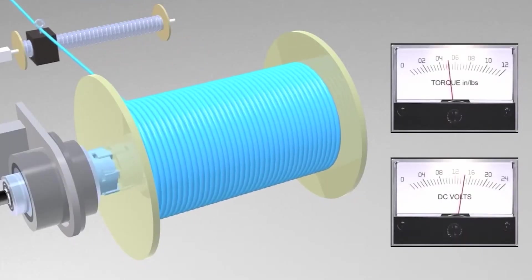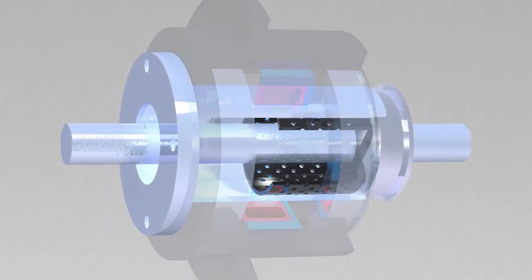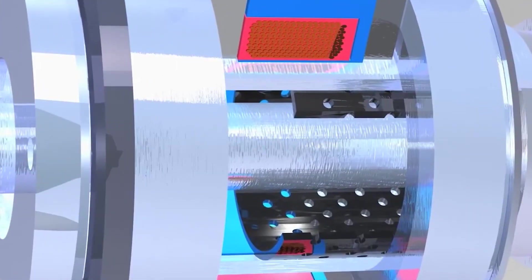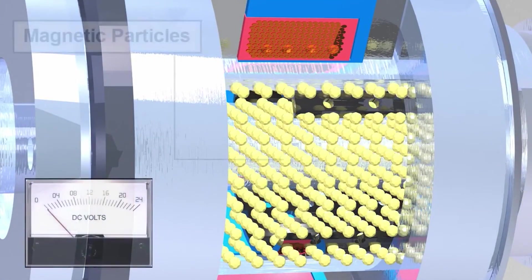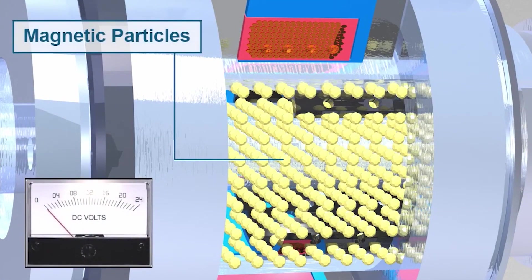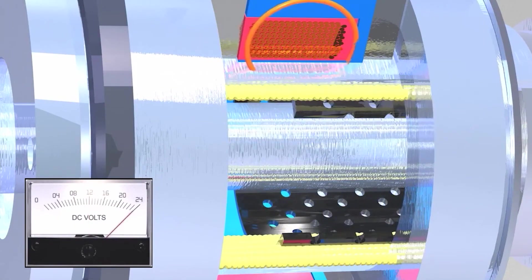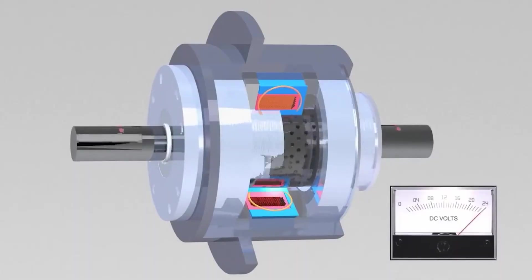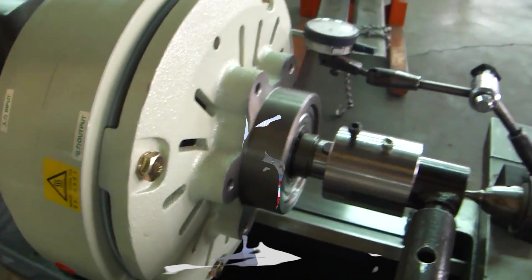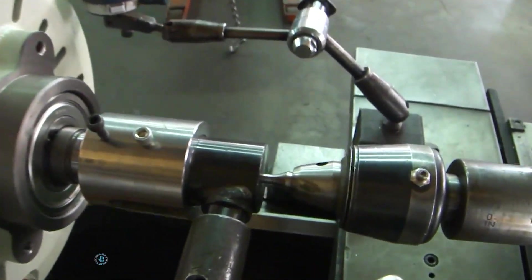Additionally, they can be used in a variety of different environments, including wet and dusty conditions. The main disadvantage of magnetic particle brakes is that they require more power to operate than traditional brakes. Additionally, they are more expensive than traditional brakes and require more complex installation procedures. Furthermore, they are not suitable for use in high-speed applications due to the risk of overheating.